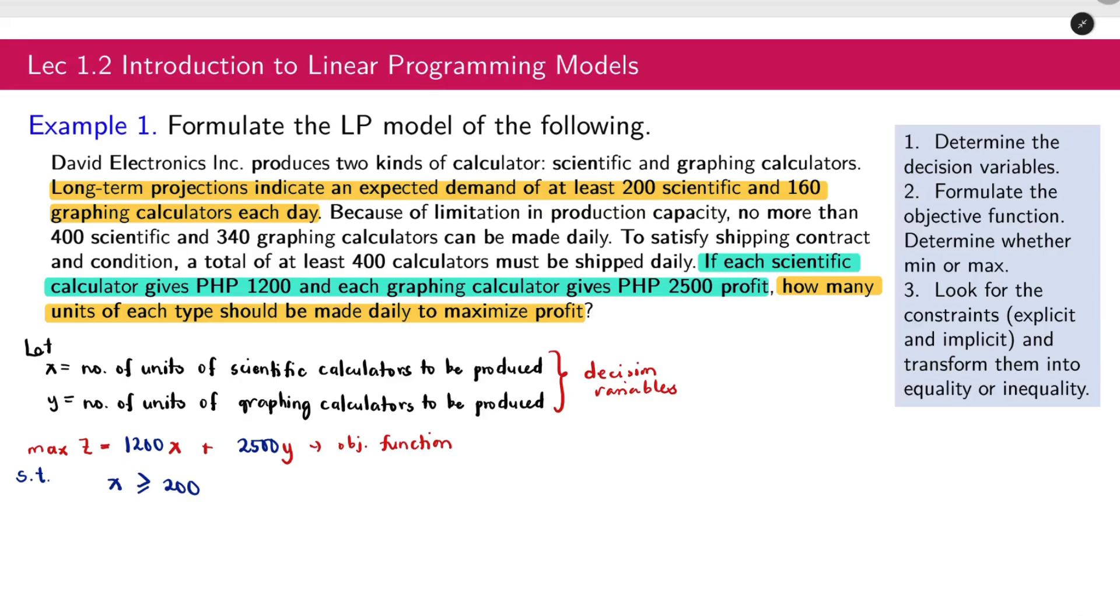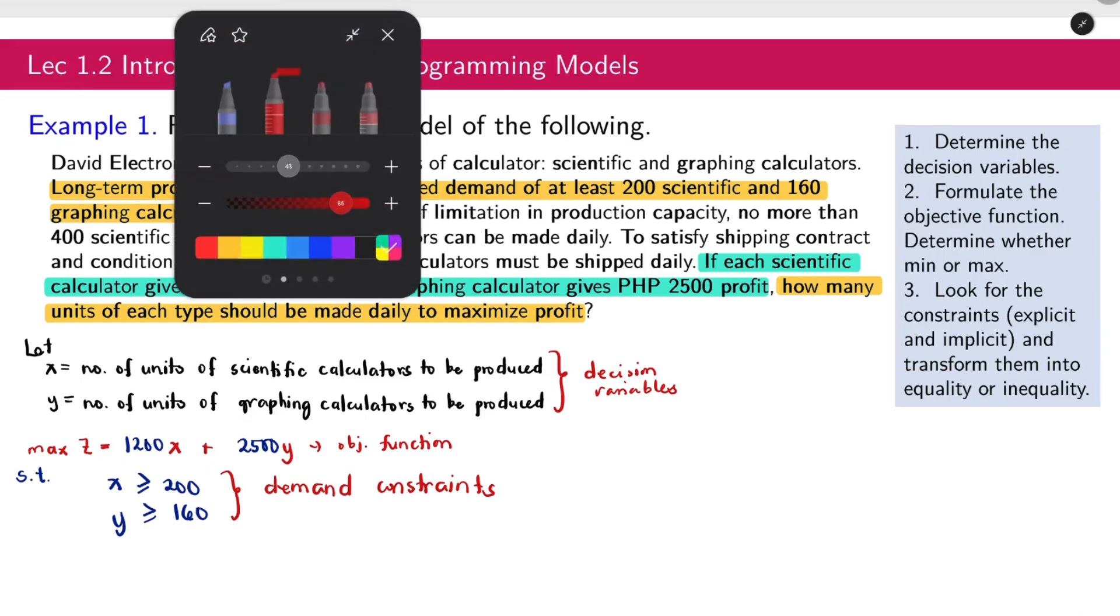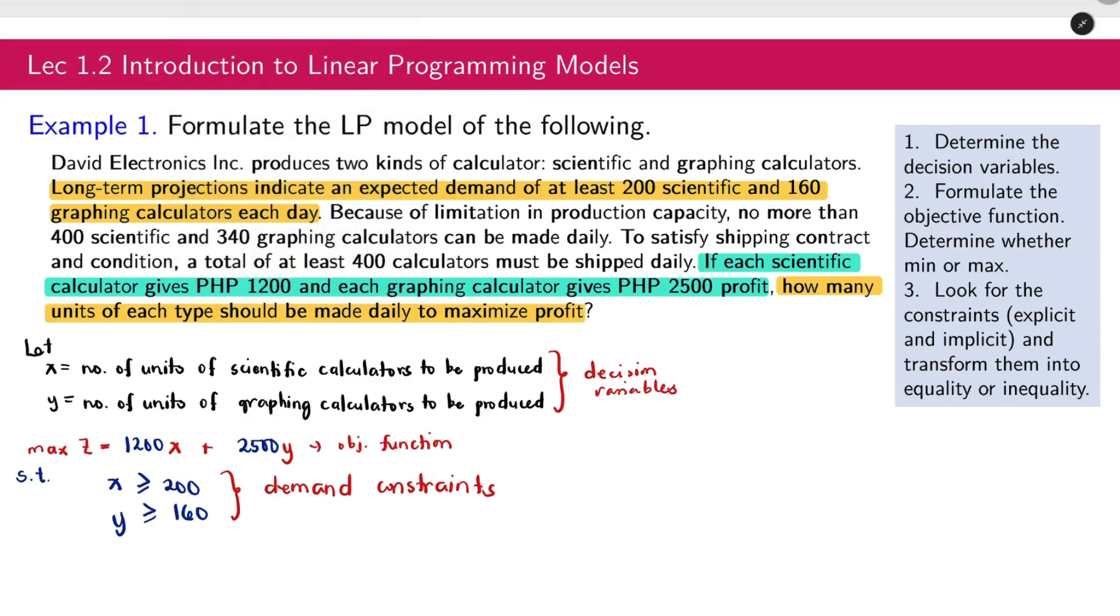The minimum demand is 200. So that is the first constraint. And then next, we have 160 graphing calculators. So that will be y is greater than or equal to 160. This is the demand constraint. Next, because of limitation in production capacity, no more than 400 scientific and 340 graphing calculators can be made daily.